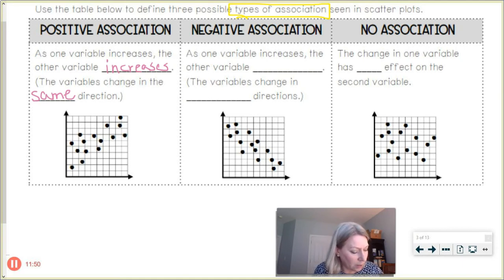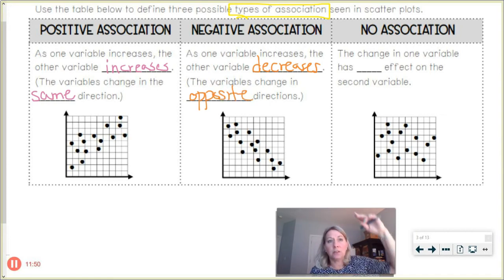All right, there's a second type of association called negative association, and that's when as one variable increases the other variable decreases, and the variables are changing in opposite directions. If you look on the example graph shown with all those little dots, it's kind of like a downward trend from left to right. If I scan and read that graph from left to right just like I'm reading a book, I could see it starts up high with those dots and goes down low on the x-axis as we scan across it.